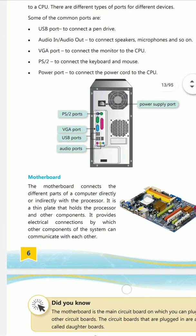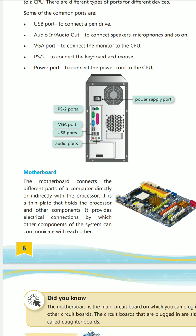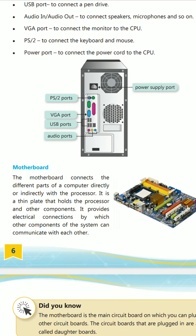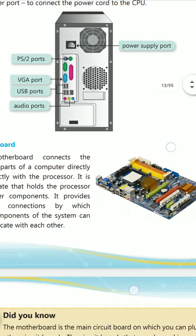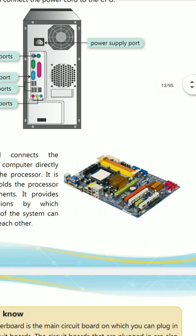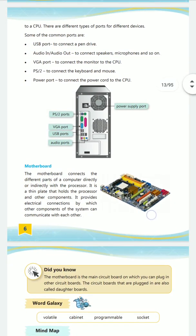Then the motherboard. The motherboard contains different parts of a computer connected directly or indirectly with the processor. It is the main part of a computer — a thin plate that holds the processor and other components, and provides electrical connections by which the components of the system can communicate. Without the motherboard, the CPU cannot work, because this is the physical part where all components are placed.